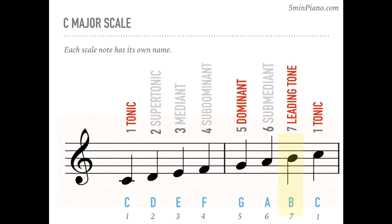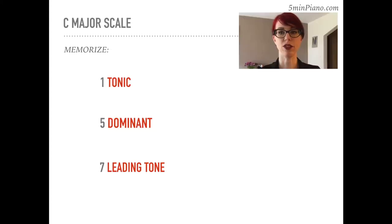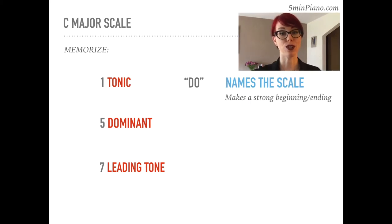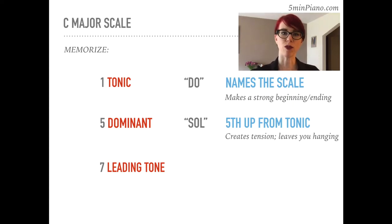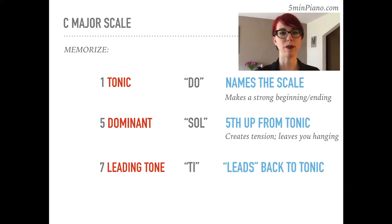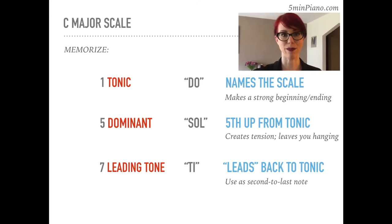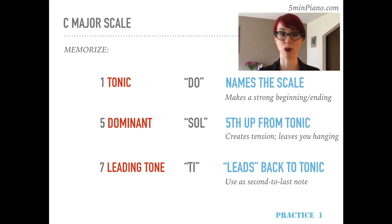Memorize the most important scale notes. The tonic — Do — names the scale. This is the most common scale note to start and end a piece with; it feels like home. The dominant — Sol — is always a fifth up from the tonic. Ending a phrase on the dominant can create tension; it leaves you feeling far from home. And the leading tone leads back to the tonic, making a great second-to-last note if you're writing a piece. At this time, you may pause the video to complete practice exercise number one.